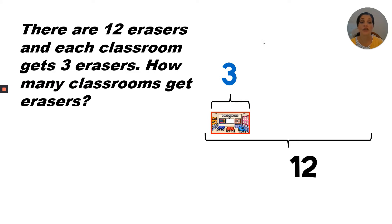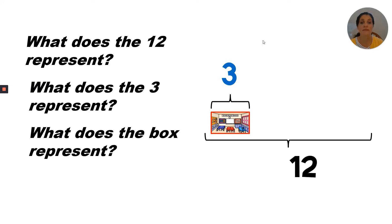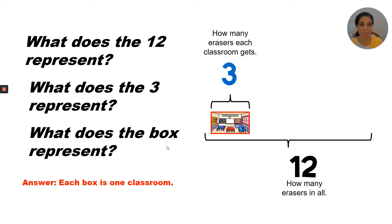There are 12 erasers and each classroom gets three erasers. How many classrooms get erasers? The 12 represents the total number of erasers. The three represents how many erasers one class gets. Each box is one classroom, so we still want to know how many classrooms there should be.